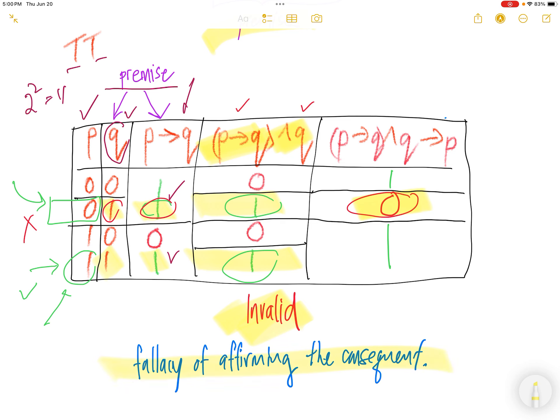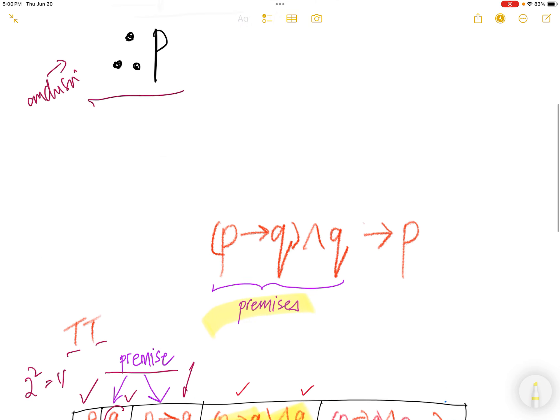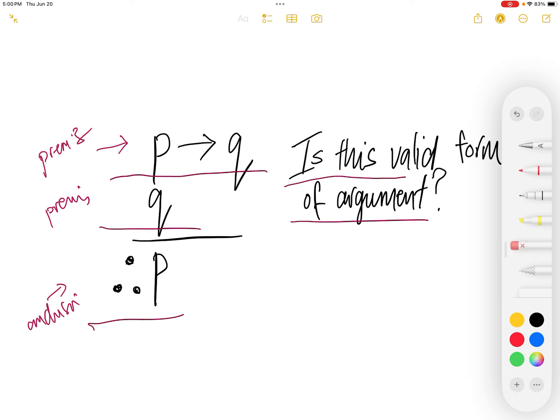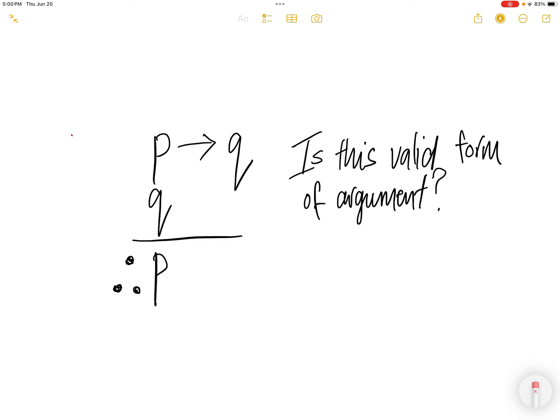There's a name for this. It's called the fallacy of affirming the consequence. To answer the original question, is this a valid form of argument? The answer is no.